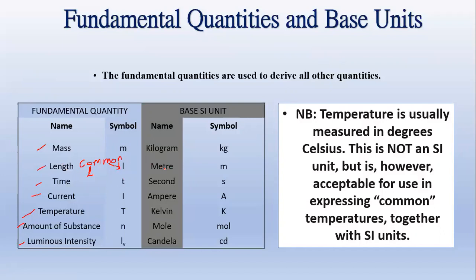Length is measured in meters, and the symbol for meters is lowercase m. The symbol for time is lowercase t — again, written in cursive. Time is measured in seconds, and the symbol for seconds is lowercase s. At no point should you write a capital S for seconds.